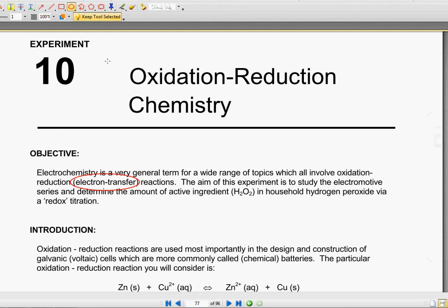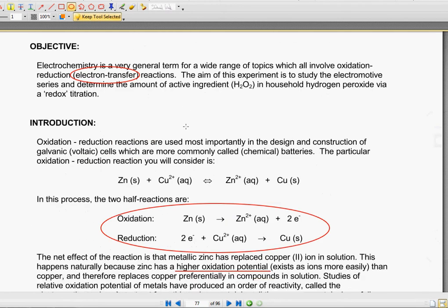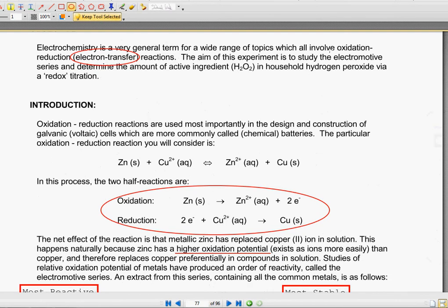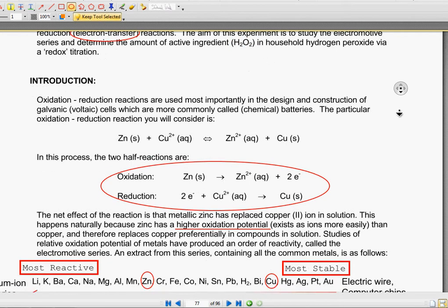Experiment 10, however, we will be doing in lab. So Experiment 10 is an oxidation-reduction chemistry lab, and it says that the objective is electrochemistry is a very general term for a wide range of topics which all involve oxidation-reduction reactions. All that means is that there is electron transfer involved. The aim of this experiment is to study both the electromotive series and to determine how much hydrogen peroxide is in household hydrogen peroxide using a titration.